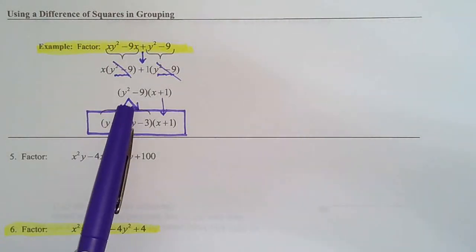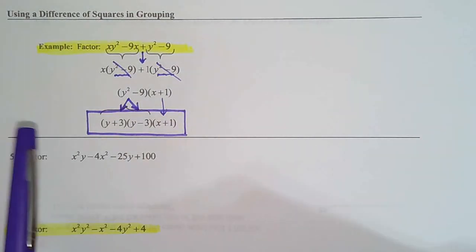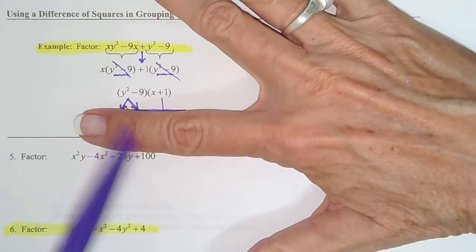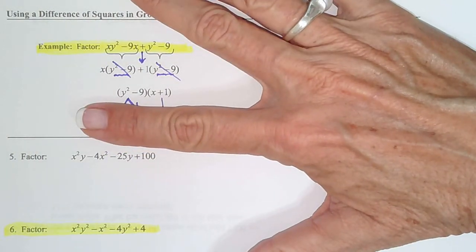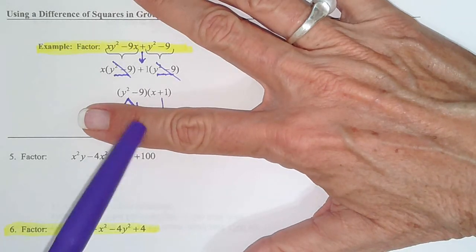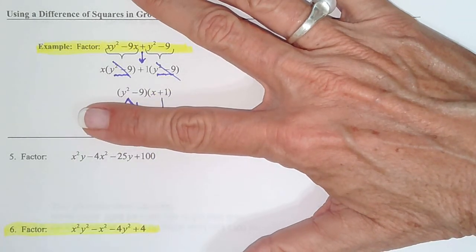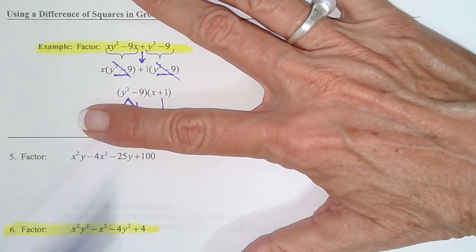We're working on the example on page 11 of the 4.7 notes, and as I was mentioning, several students stop right there. They don't look to see if one or both of the polynomials factor again. This one does.